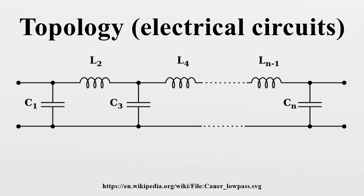Strictly speaking, replacing a component with one of an entirely different type is still the same topology. In some contexts, however, these can loosely be described as different topologies. For instance, interchanging inductors and capacitors in a low-pass filter results in a high-pass filter. These might be described as high-pass and low-pass topologies even though the network topology is identical.